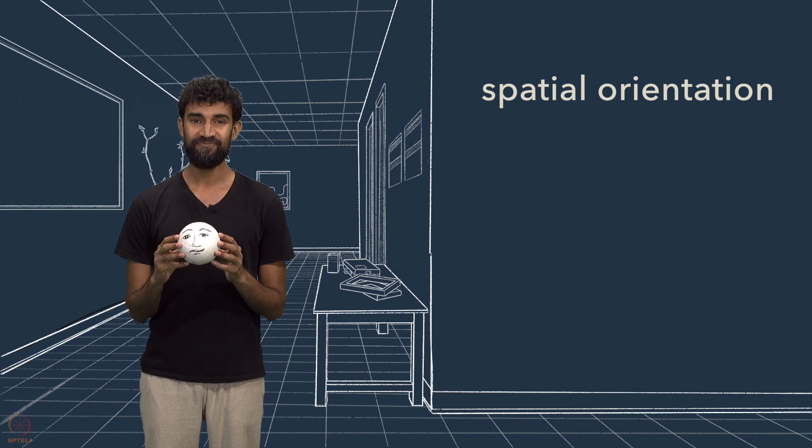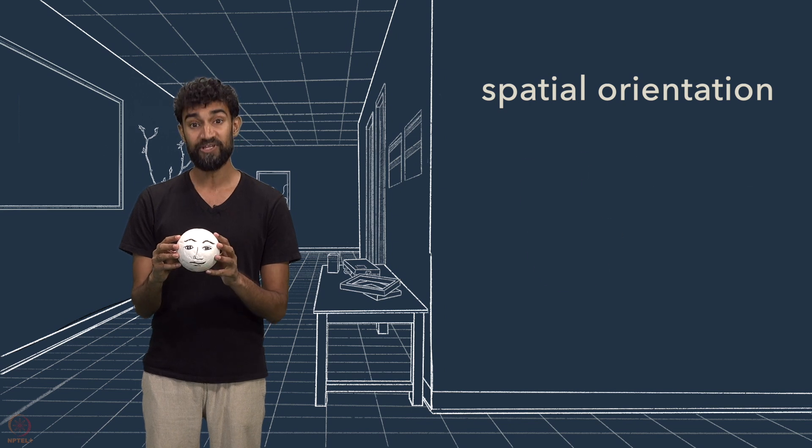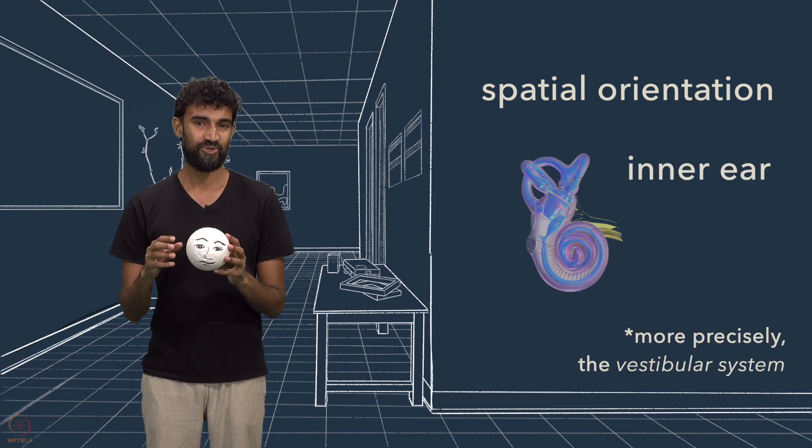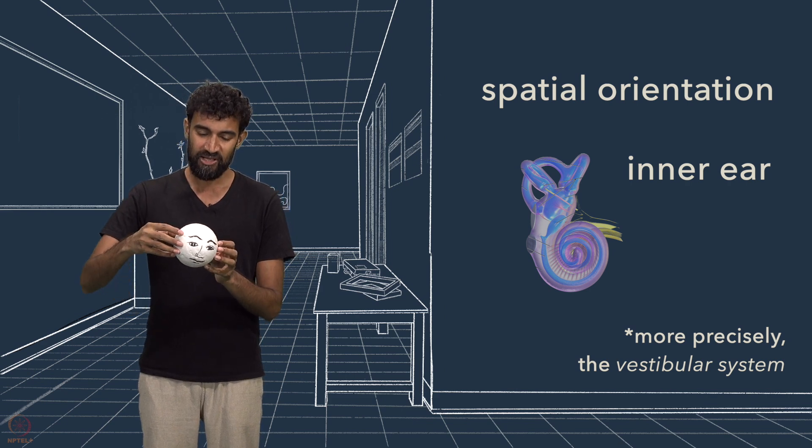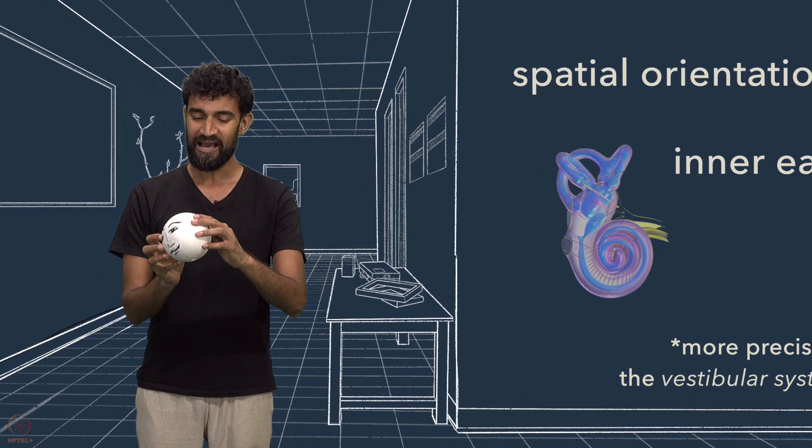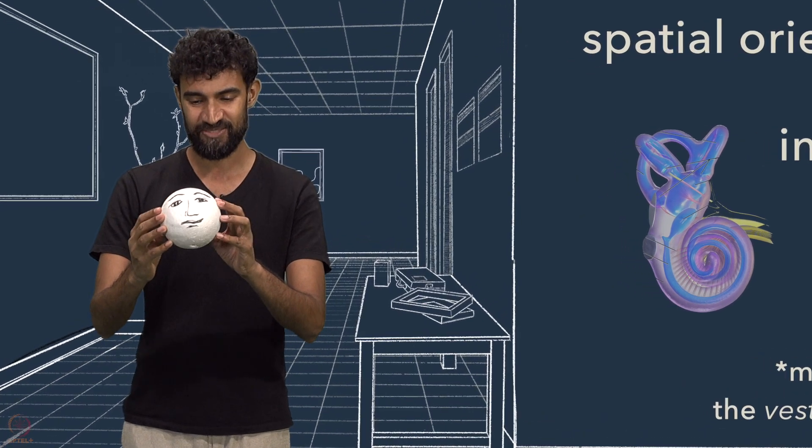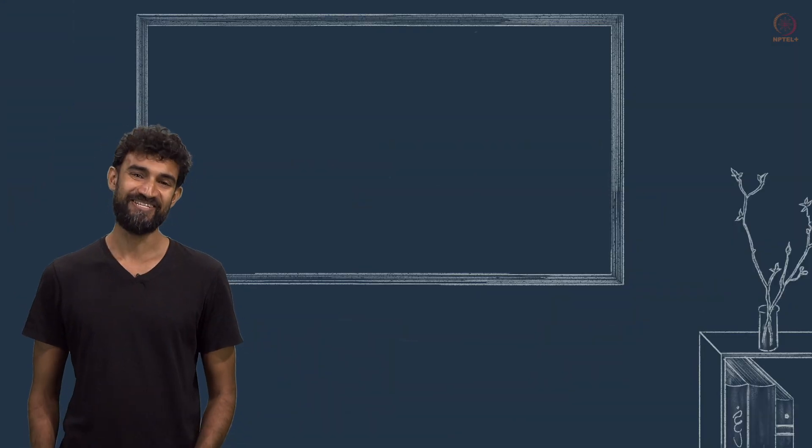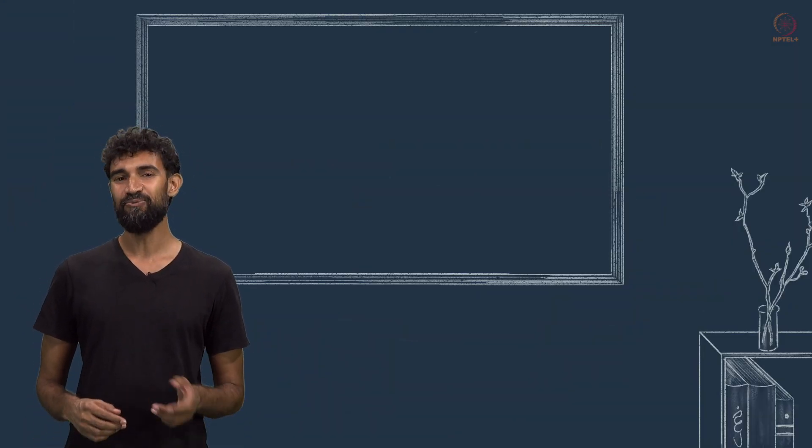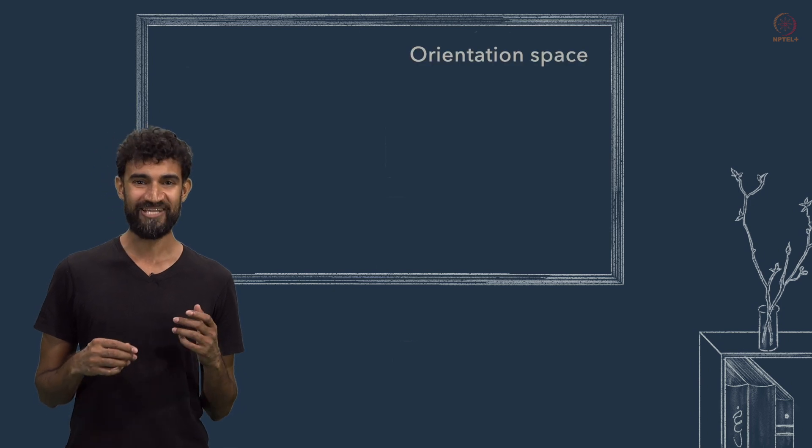This physical sense has its very own intricate sense organ, called the inner ear. Which you could think of as a tiny gyroscope inside your head, which constantly monitors how your head is oriented in space as you go about your day. As our brains process this spatial orientation data, we're secretly traveling through orientation space.